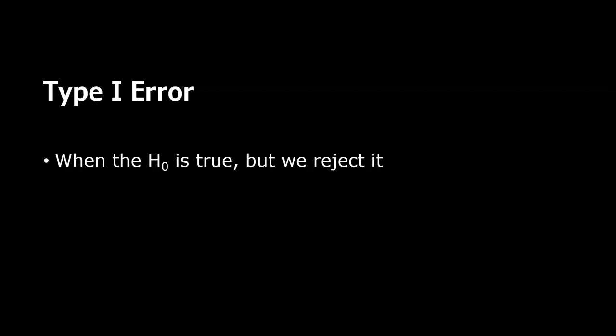This is when the null hypothesis is true, but we reject it. Now the probability of making a type 1 error is alpha. So if our alpha is 0.05, the probability of making a type 1 error would be 5%.